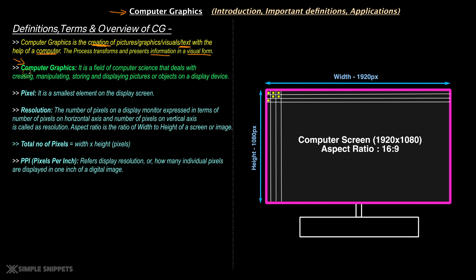Let's look at a more technical, computer science oriented definition. Computer graphics is a field of computer science that deals with creating, manipulating, storing, and displaying pictures or objects on a display device. It is a complete domain that deals with creating, manipulating, storing, and displaying pictures, objects, text, and information — whatever you see on the screen. This is digitally created and there are algorithms that run behind the scenes to create those visuals.